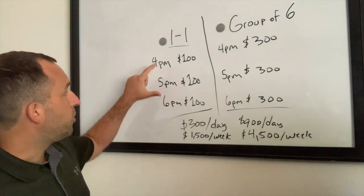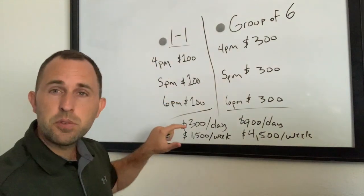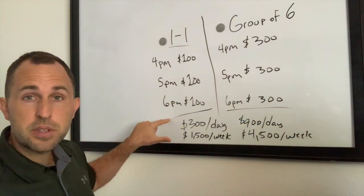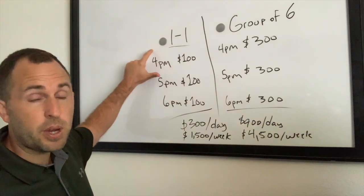The only way to make more money with this model is if you start adding more hours. So adding a 7pm slot, adding a 3pm slot, or adding morning slots.